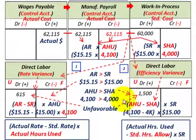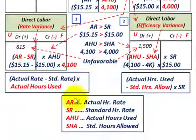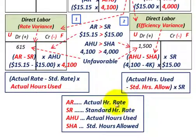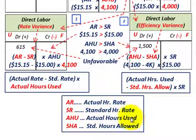Let's look at our key abbreviations: AR in red stands for Actual Hourly Rate, SR means Standard Hourly Rate, AHU is Actual Hours Used, and SHA is Standard Hours Allowed.